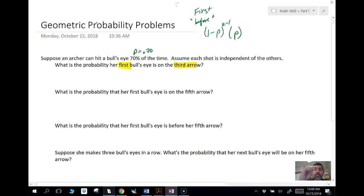So that means she's going to miss, miss, make. So we're going to write that in the geometric form: 0.30 squared times 0.70. And we're going to put that in the calculator and we're going to get 0.063. All right, that kind of makes sense.